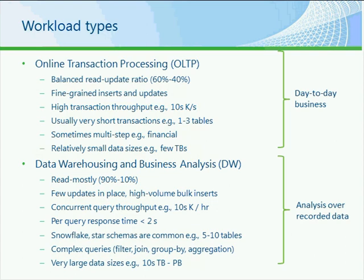There's a high transaction throughput with unary transactions run against individual rows. They're usually very short transactions and don't encompass many tables for one update. Sometimes there are multi-step transactions such as financial transactions for closing the books. In general, it's very unary operations, and they're relatively small data sizes at the few terabytes level—not the massive sizes experienced with data warehousing workloads.